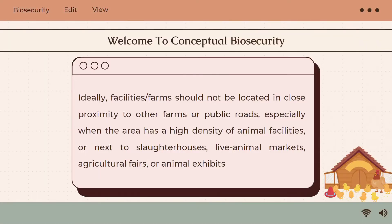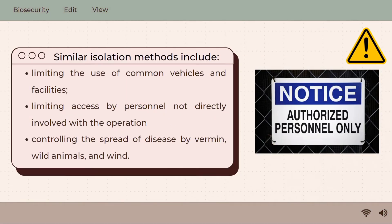Ideally, facilities or farms should not be located in close proximity to other farms or public roads, especially when the area has a high density of animal facilities, or next to slaughterhouses, live animal markets, agricultural fairs, or animal exhibits. Similar isolation methods include limiting the use of common vehicles and facilities, limiting access by personnel not directly involved with the operation, and controlling the spread of disease by vermin, wild animals, and wind.